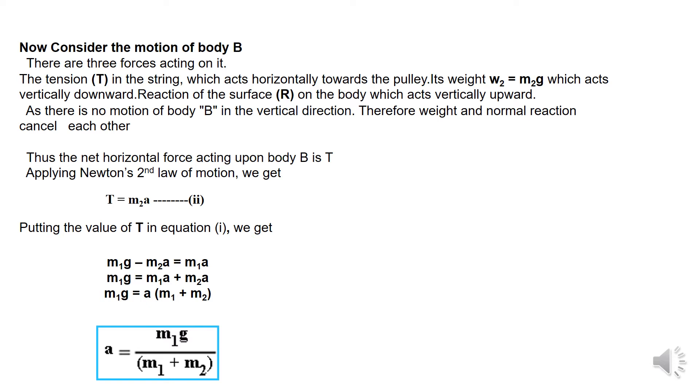When you add the first and second equation, you get the value for acceleration which is M1 over M1 plus M2G. And when you substitute the value of A in any one of the equation, one or two, the value of T is M1M2 over M1 plus M2, the whole times G.